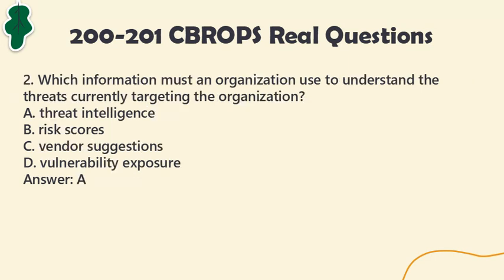Question 2: Which information must an organization use to understand the threats currently targeting the organization? A. Threat intelligence. B. Risk scores. C. Vendor suggestions. D. Vulnerability exposure. Answer: A.